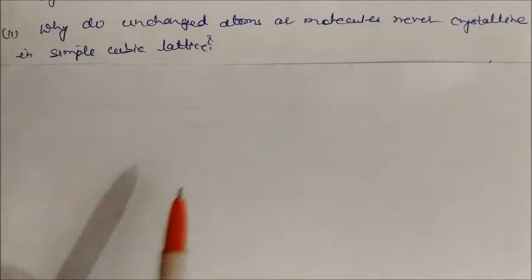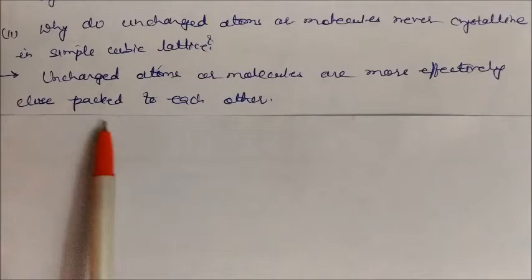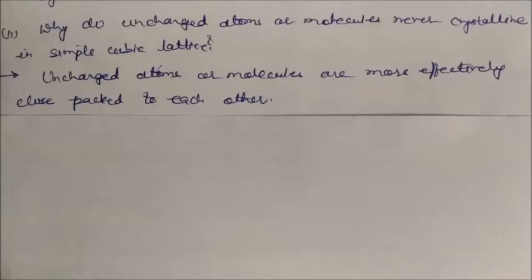Why do uncharged atoms or molecules never crystallize in a simple cubic lattice? Because uncharged atoms or molecules can more effectively close-pack with each other. Since they can pack more efficiently in other arrangements, they never crystallize in the simple cubic lattice.